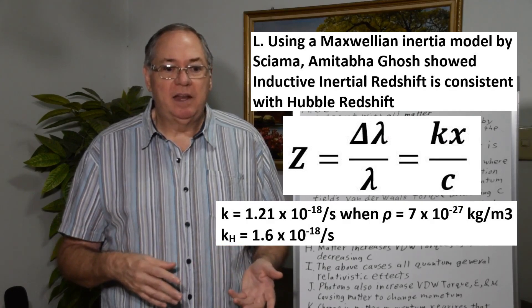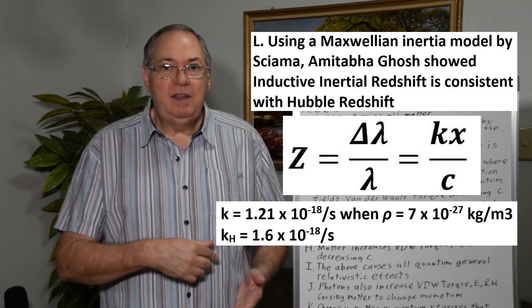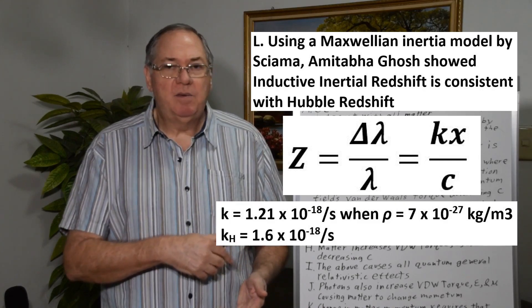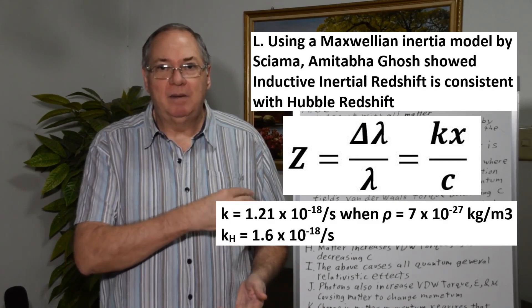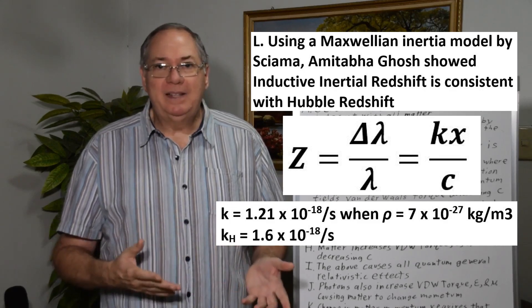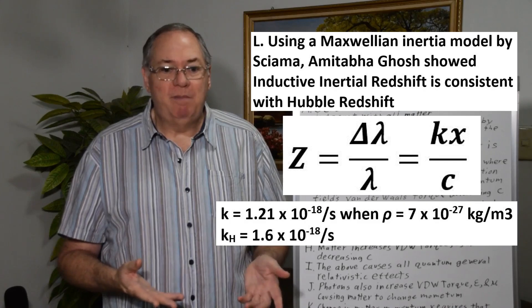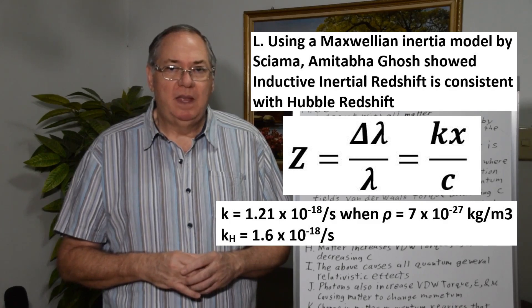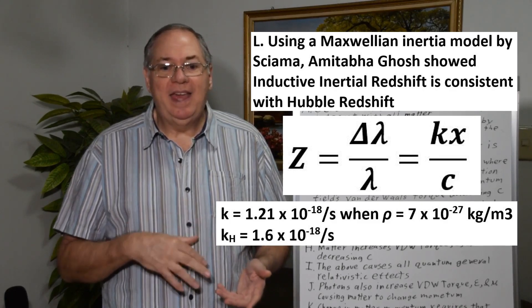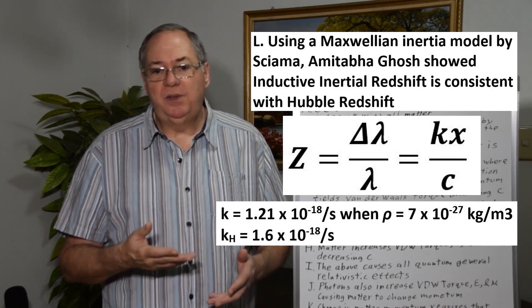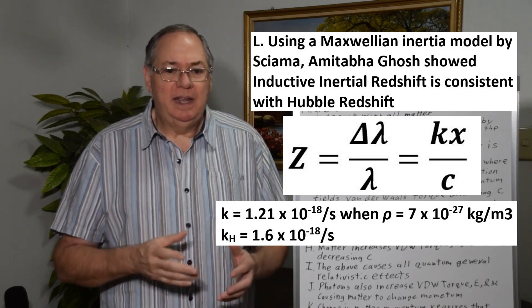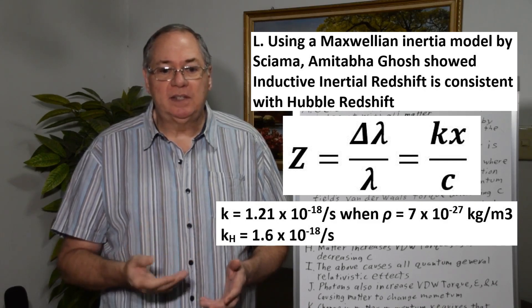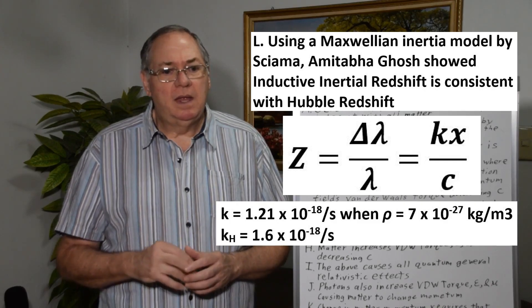And Ghosh realized that he could calculate redshift. So Z, which is the change in the wavelength over the wavelength, is equal to a constant K divided by the speed of light times X, the distance, which is basically the linear Hubble redshift model, where K is a form of the Hubble redshift constant. And so Ghosh was able to calculate K and show that it's equal to 1.21 times 10^-18 per second in this equation. While the Hubble redshift K is 1.6 times 10^-18 per second.